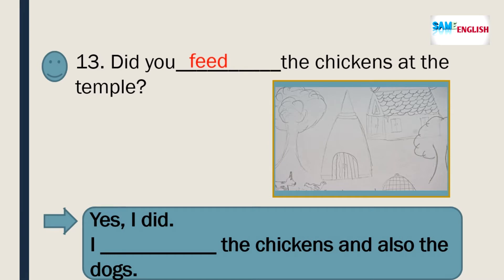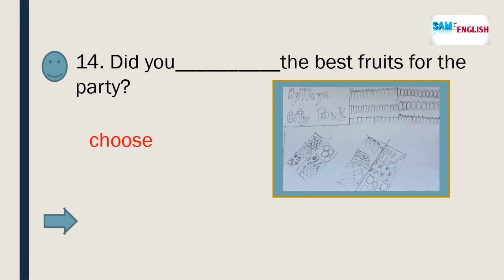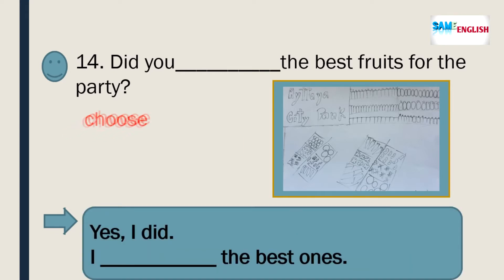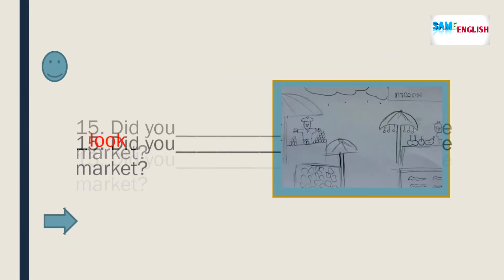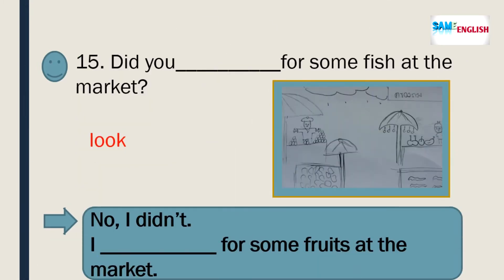Did you feed the chickens at the temple? Did you choose the best route for the party? Did you look for some fish at the market?